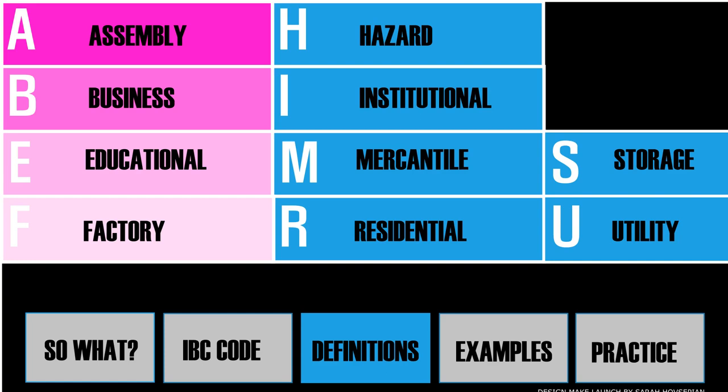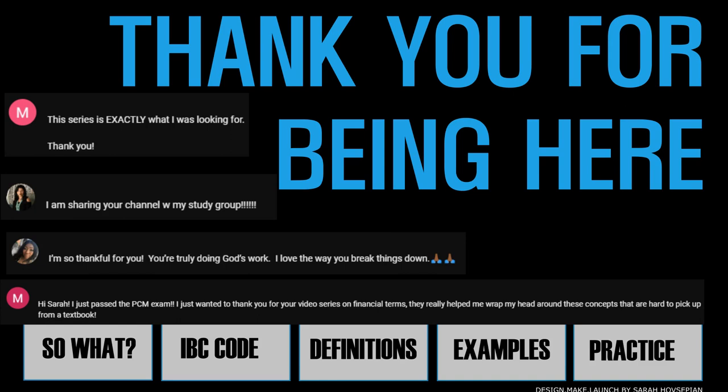So far we've reviewed A for Assembly, B for Business, E for Educational, and F for Factory Industrial. If you're enjoying the video, please give it a thumbs up. Click here to watch part two and cover the remaining occupancy groups.